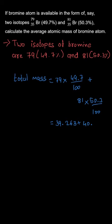Solving this, we get 39.263 plus 40.743, which gives us 80.006 u — that is 80.006 atomic mass units. This can be rounded off to 80, so the atomic mass of bromine in general is 80 atomic mass units.